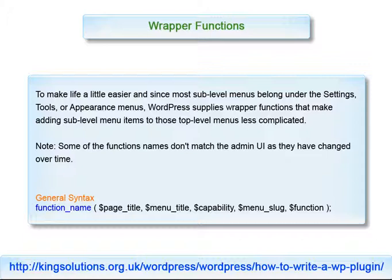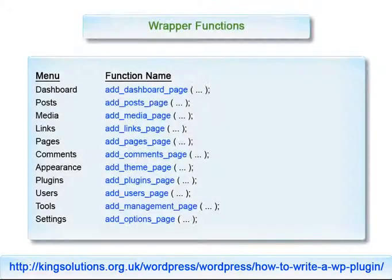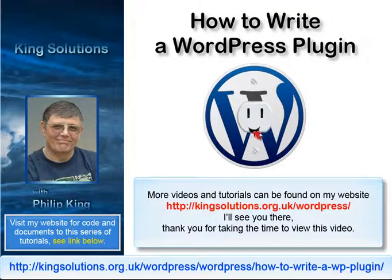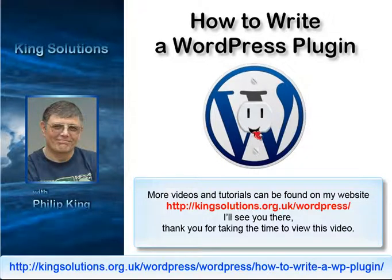To make life a little easier, and since most sub level menus belong under the settings, tools or appearance menus, WordPress supplies wrapper functions that make adding sub level menu items to those top level menus less complicated. You may notice that some of the function names don't match the admin user interface. This is simply because WordPress has changed over time. That's all for this tutorial introducing top level and sub level admin menus. See you in the next lessons, where we will write some code using our plugin class to demonstrate what we've covered here.